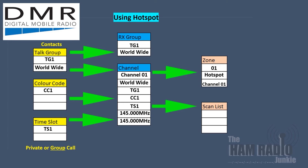In this first example, the owner of this radio wants to set up their first contact as the worldwide talk group, which is identified as talk group 1. To gain access to the hotspot is colour code 1, and this is set up in the software of the hotspot. To access the talk group 1 worldwide network requires timeslot 1 access, and it will be a group call as they wish to hear everybody and be transmitted to everybody on that talk group. We simply now move that information across from the contacts into the receive group and then the channel settings, and once we have the channel settings we can move that across either into the zone or into the scan list.